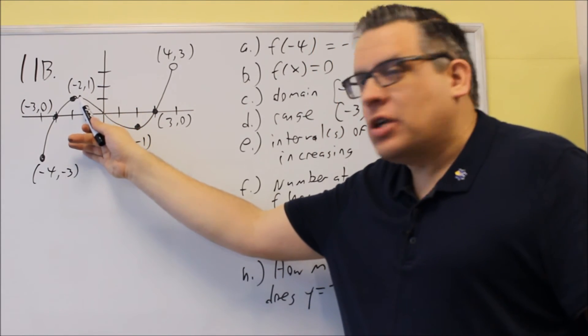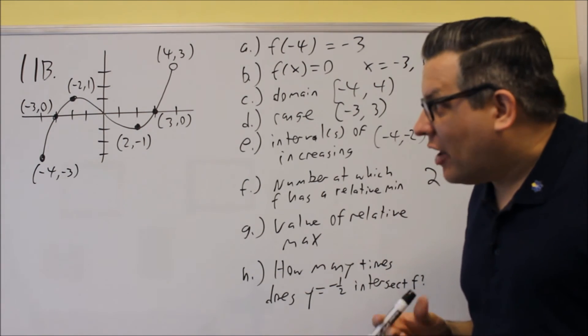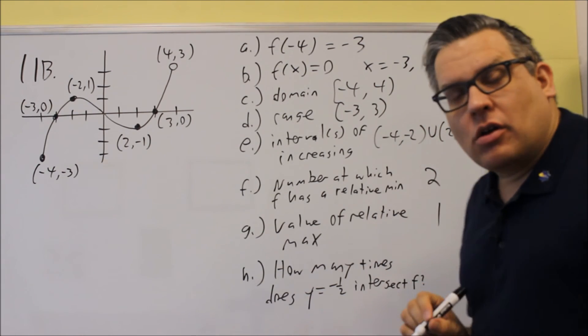In that case, the relative max would be at (-2, 1). The value means we're only going to indicate the y value. So I would put 1 for my answer there.